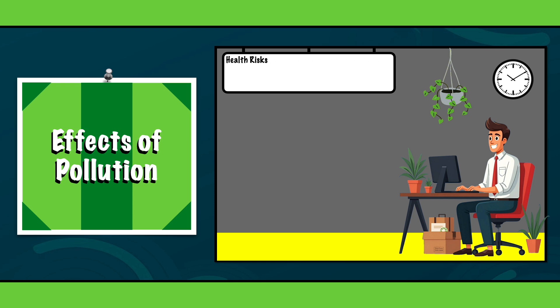Health risks. Polluted air and water can cause respiratory diseases, heart problems and even cancers. For instance, cities with high levels of air pollution see more cases of asthma and other lung diseases.